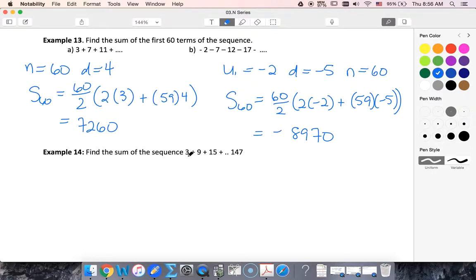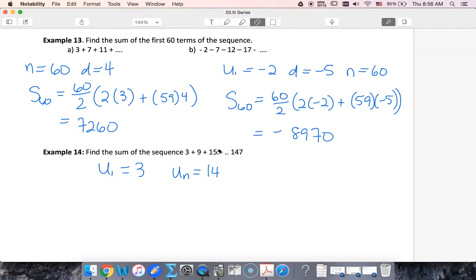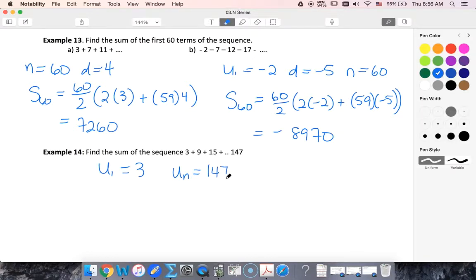In this example, we know our first term. We know our last term, 147. We can conclude that our d value is 6. What we don't know is n. So that's the first thing we need to find out.